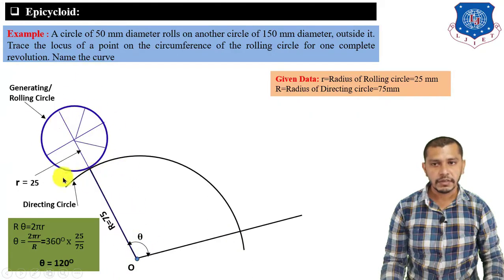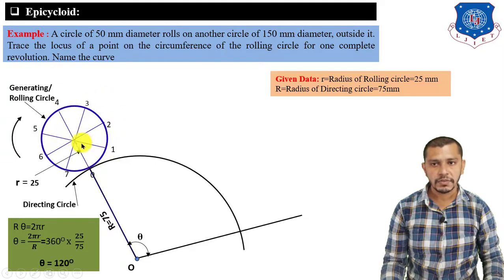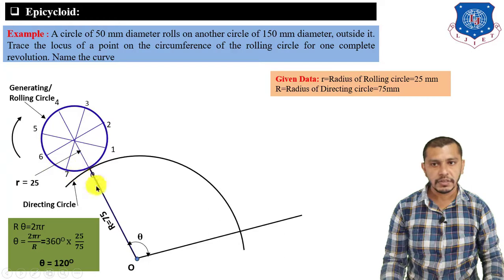Since the rolling circle is going to roll in the clockwise direction, give the numbering starting from zero in the anticlockwise direction on the rolling circle, because the first division going into contact with the directing circle will be this point. So number them anticlockwise: 0, 1, 2, 3, 4, 5, 6, 7.